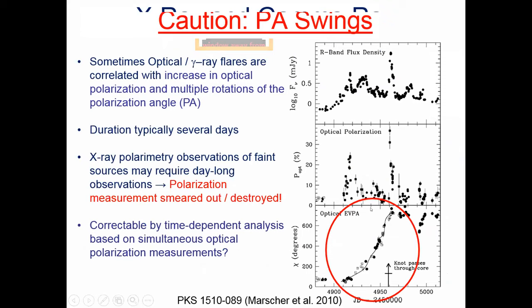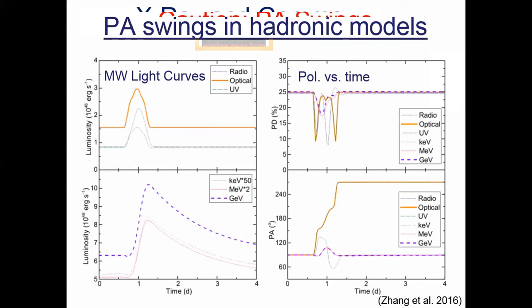An important caveat — and Haocheng Zhang has pointed this out — is that polarization angles are known to swing and be variable. X-ray and gamma-ray polarimetry will typically require observation times of several days, which may be longer than the timescales of polarization angle swings. Without a way to correct for this — perhaps using the optical polarization angle as a template for what to expect in X-rays — it is really impossible to measure that polarization with long-duration integrations. The problem is compounded if variability is driven by magnetic reconnection: the optical and X-ray polarization angle variability do not necessarily have to be correlated.